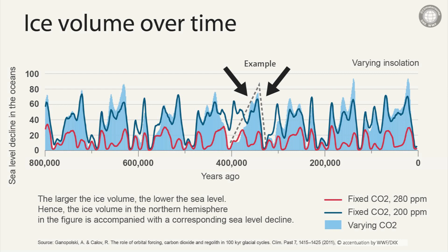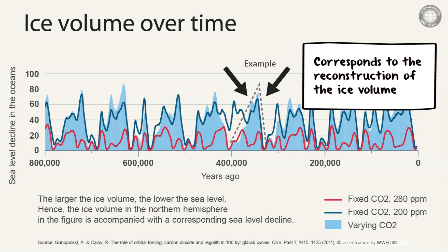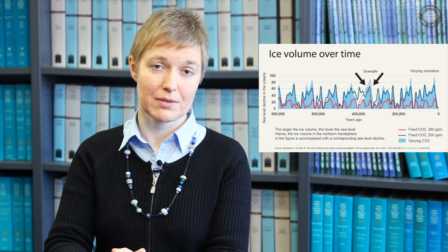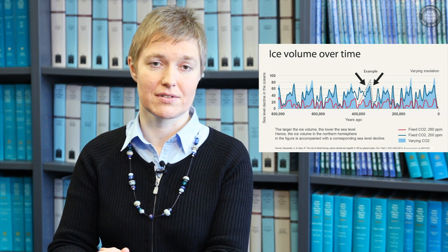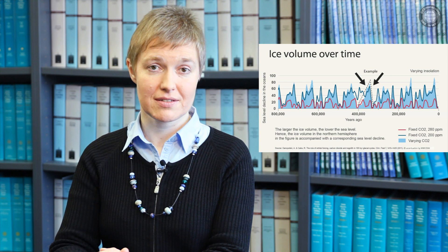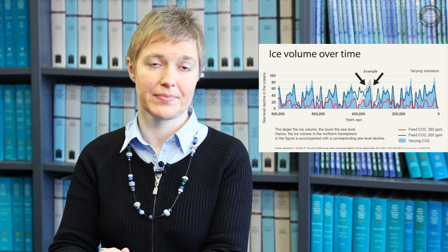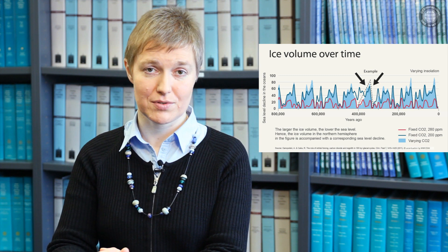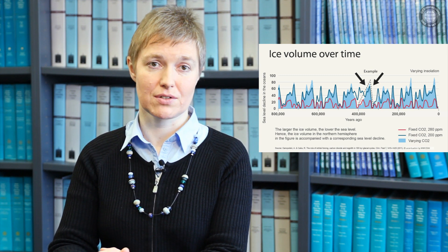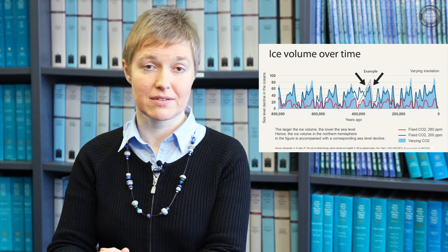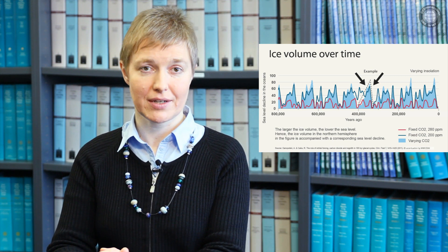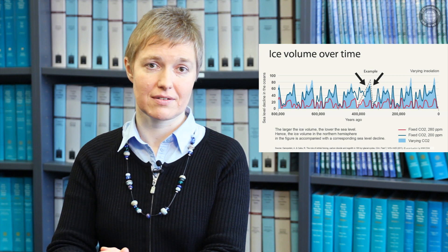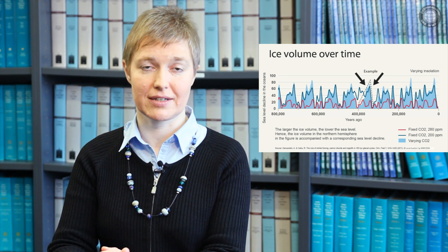In summary, the peaks — that is, the maximum ice volume reached during the ice ages — are now significantly closer to the values reported by the reconstructions. We can conclude that we have to specify both the fluctuations in the Earth's orbital elements and the fluctuations in CO2 concentration in the model in order to obtain realistic results for the fluctuations in ice volume. In other words, fluctuations in the Earth's orbital elements make a major contribution to the succession of interglacial and glacial periods, but you also need the fluctuations in CO2 concentration to accurately reproduce the exact dynamics of the interglacial-glacial cycles.